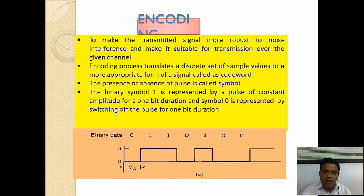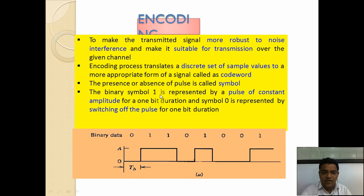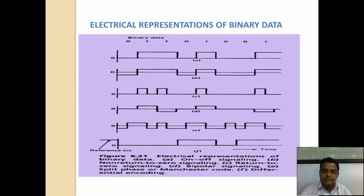In encoding, to make the transmitted signal more robust to noise and interference and suitable for transmission over a given channel, the encoding process translates the discrete set of sample values into a more appropriate form called a code word. The presence or absence of pulses is called a symbol. Binary symbol 1 is represented by a pulse of constant amplitude, and 0 is represented by the absence of a pulse.